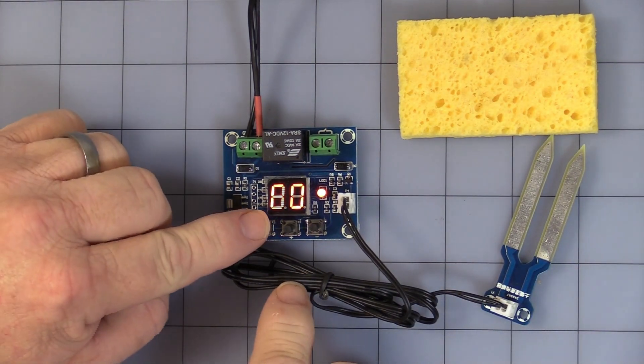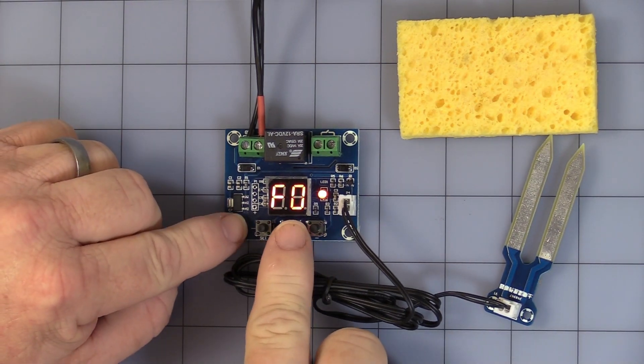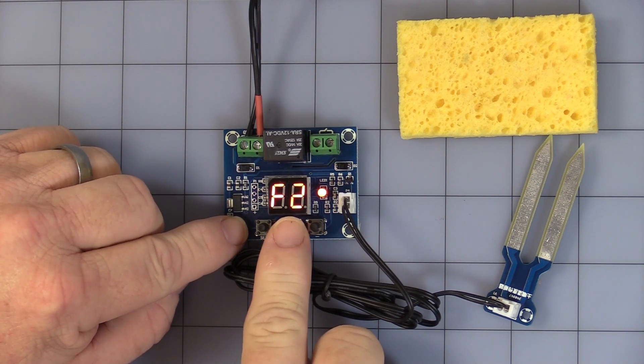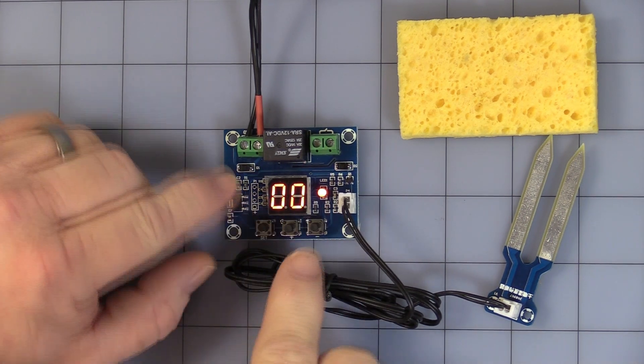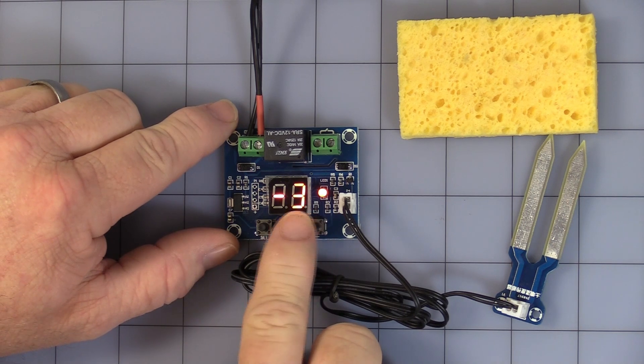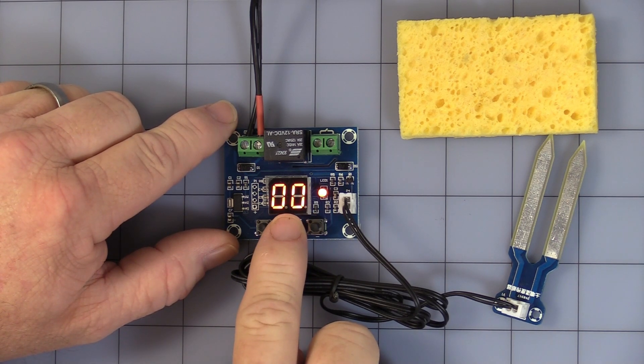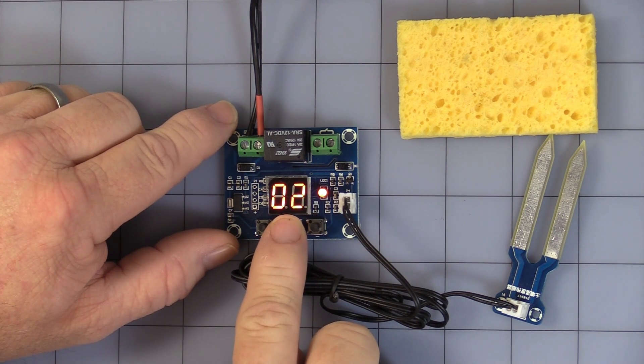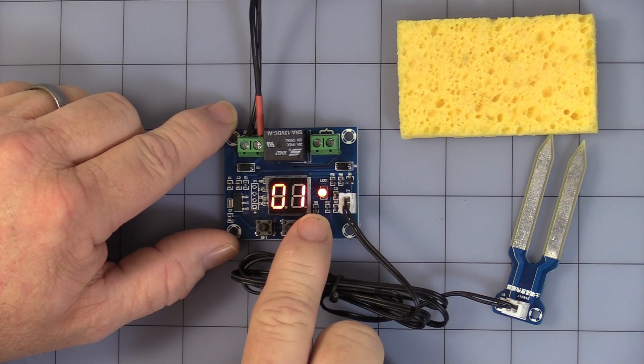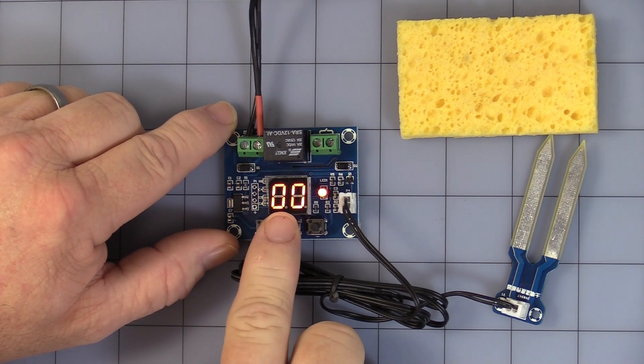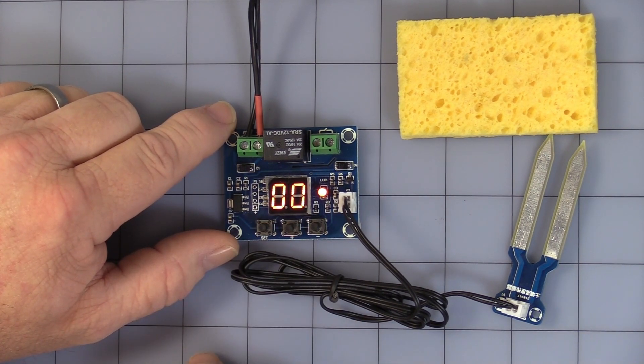The only other setting is F2. You hit the set button and the plus twice, then the set again. This is a calibration. You can hit plus or minus to calibrate if you have a longer cable or some scenario where you need to actually adjust the settings.